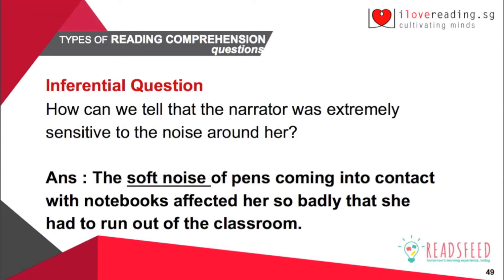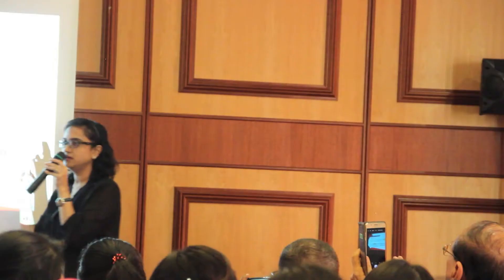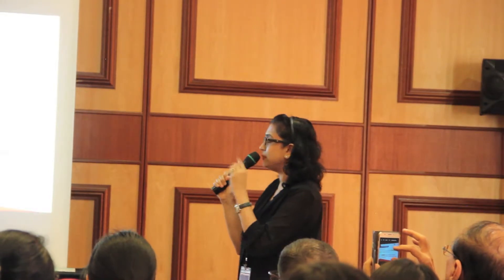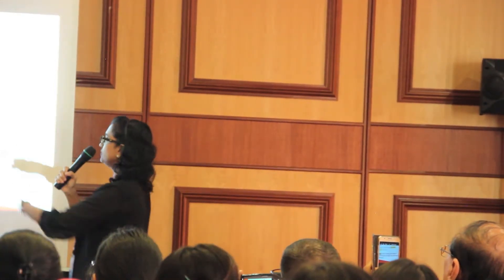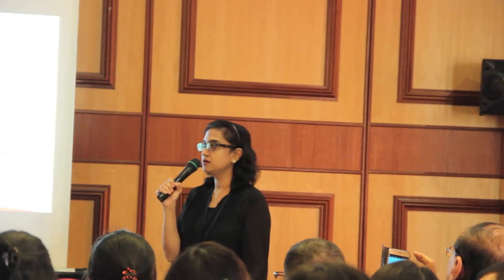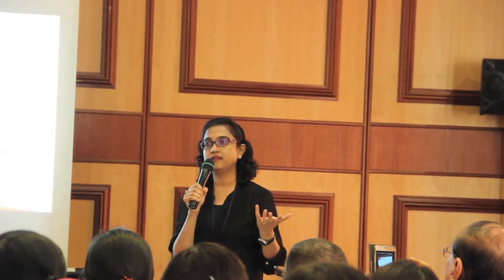Extremely sensitive. Getting the student sensitive to such words is also important when there is a certain connotation. So, 'soft noise of pens coming into contact with notebooks affected her so badly that she had to run out of the classroom screaming.' That shows how she was extremely sensitive to the noise — what the soft noise was, and what she did, which shows her sensitivity. Two parts — this will probably be a two-mark question. We break up the question for them so they understand which part and why 'extremely sensitive' is important. If you just say 'noise of pens,' you're not going to get the mark because you haven't addressed that 'extremely sensitive' part.